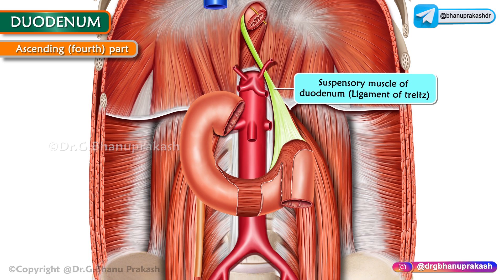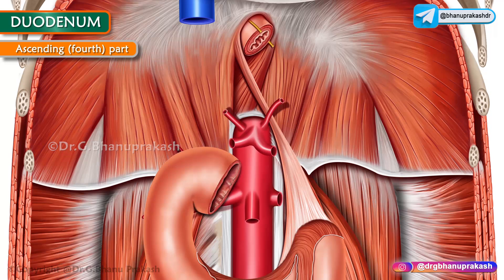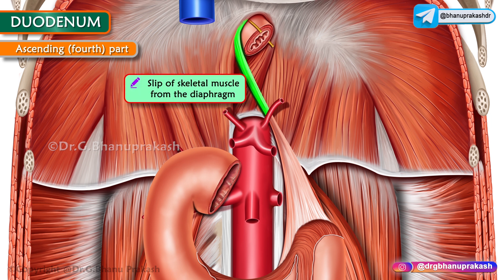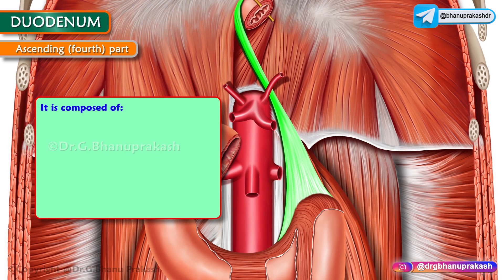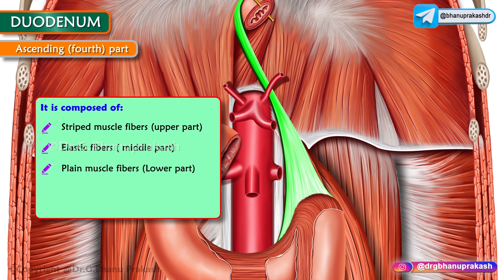The fourth part is supported by the suspensory muscle of the duodenum, called the ligament of Treitz. This ligament is composed of a slip of skeletal muscle from the diaphragm and a fibromuscular band of smooth muscle from the third and fourth parts of the duodenum. It consists of striated muscle fibers mostly in the upper parts, elastic fibers in the middle part, and plain muscle fibers in the lower parts.